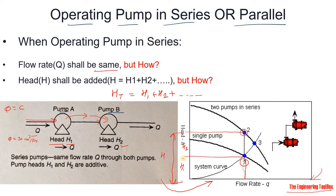H1 plus H2 is the theoretical total head. In a practical scenario, looking at the system curve at point 0.3, when two pumps run in series the expected head from the pump performance curve should be higher, but practically you get a lower head at that operating point. That is the difference between theoretical and practical performance in a series arrangement.